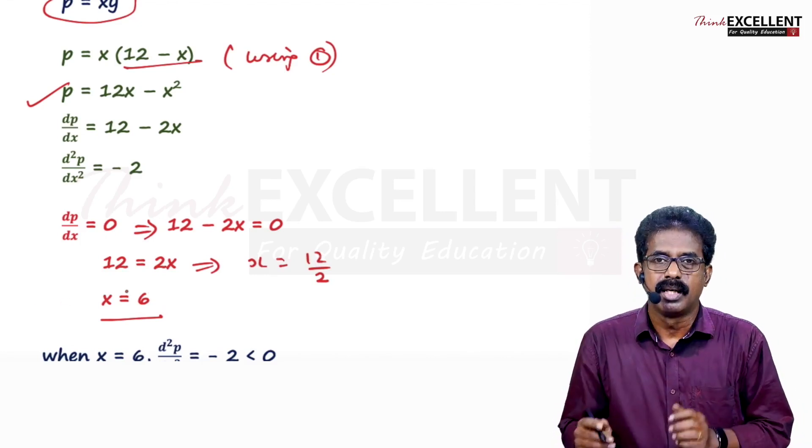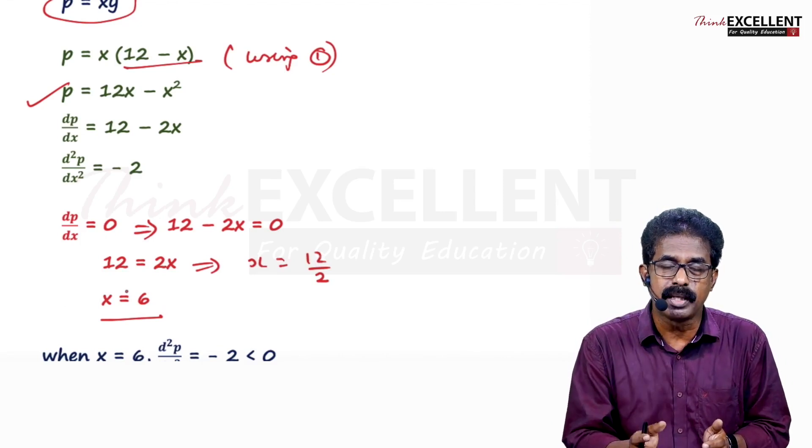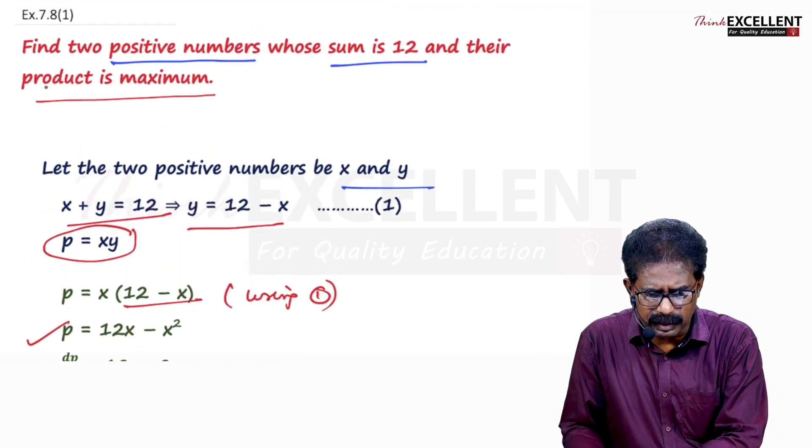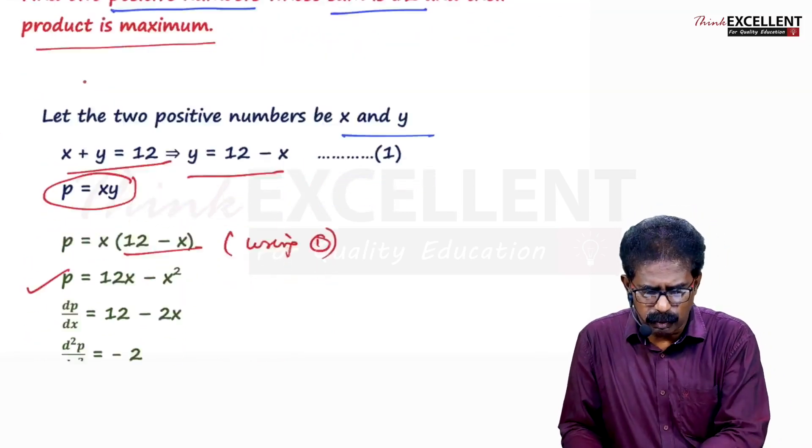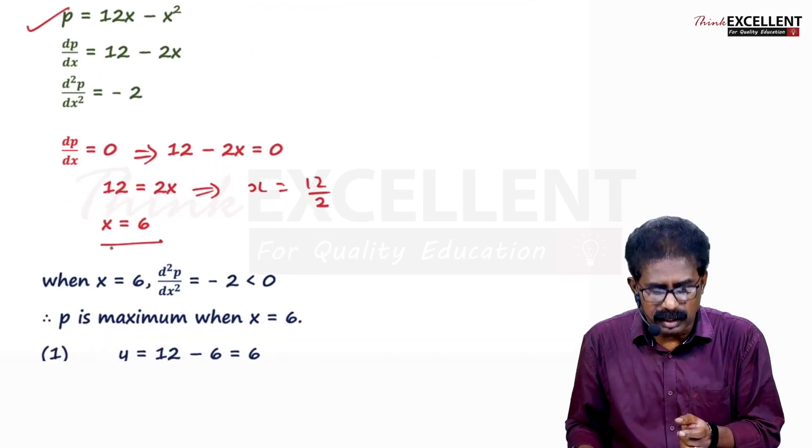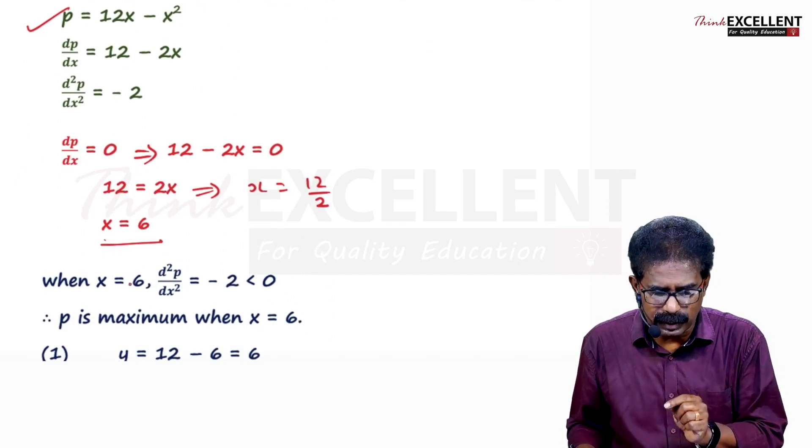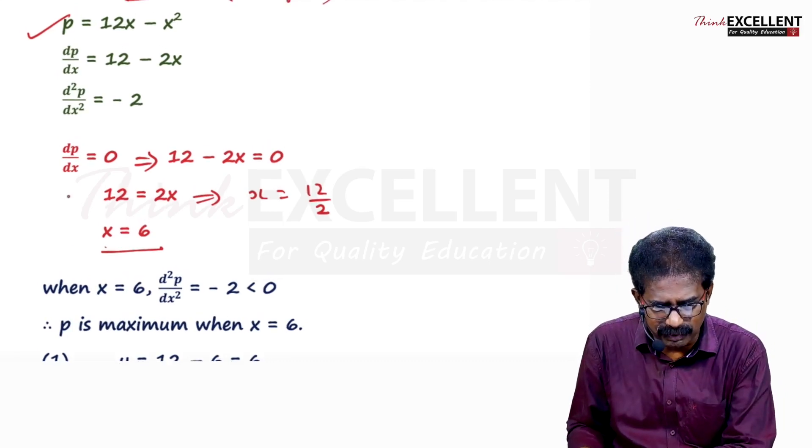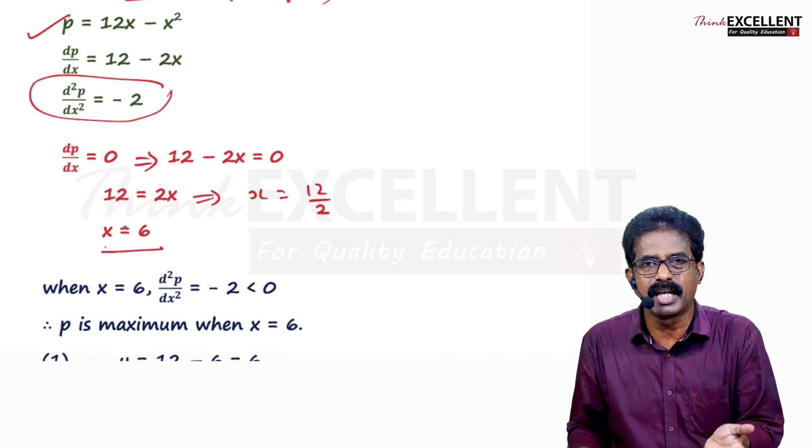So X equal to 6. This is a stationary point. You know at that point you may get a maximum or minimum. We have to prove there is a product is maximum. Maximum means second derivative must be negative. So what you have to do? You substitute this point in the second derivative. In the second derivative, wherever X comes, you put X equal to 6.